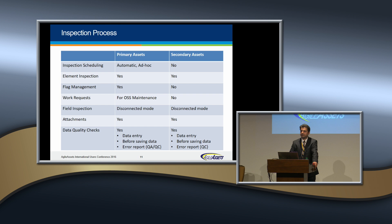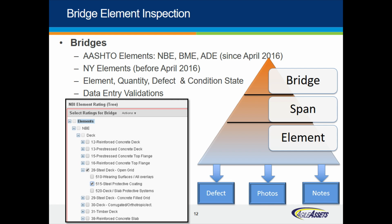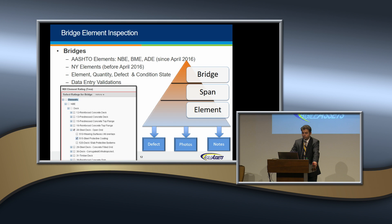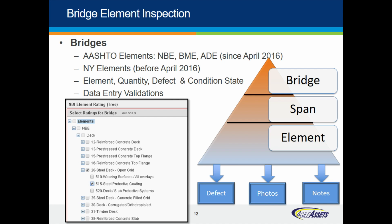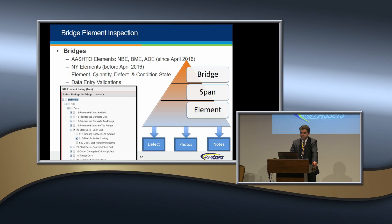The challenging part for the inspection process was the element-level inspection, which we implemented for all assets — primary and secondary. For bridges, element-level inspection supports national bridge elements, bridge management elements, and agency development elements, implemented since April 2016, and NYSDOT is using that. For all elements — quantity, defect, and condition state — we have data entry validation. The challenging part for New York is they do span-by-span inspection, so for one bridge you may have multiple spans, and at each span you have multiple elements. At the element level, the user can define defects, photos, and notes.